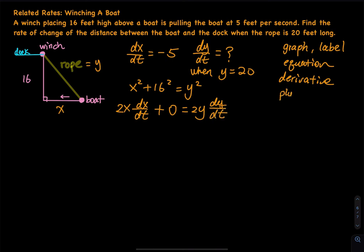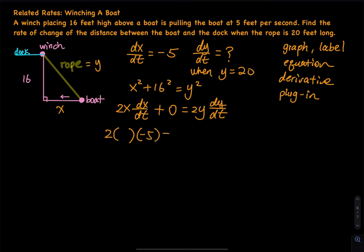Now plug in and solve for the unknown. We have 2 times x times dx/dt — we don't know x yet. dx/dt equals negative 5, plus 0, equals 2 times y times dy/dt. And y equals 20, while dy/dt is unknown.